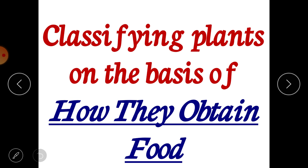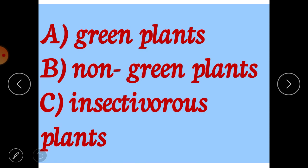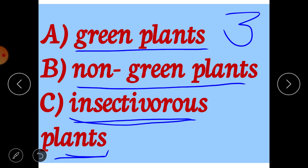In today's video we are going to classify plants on the basis of how they obtain food. On the basis of how they obtain food, plants can be classified into three categories: number one is green plants, number two is non-green plants, and number three is insectivorous plants.